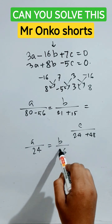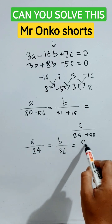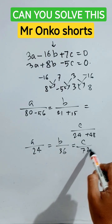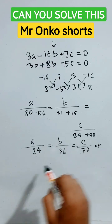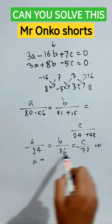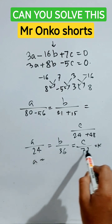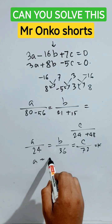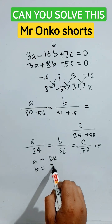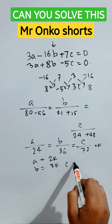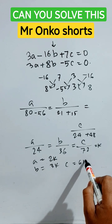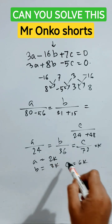Equals to c divided by 72, equals to k. Then it will be a equals to 2k, b will be 3k, and c will be 6k. These are the answers.